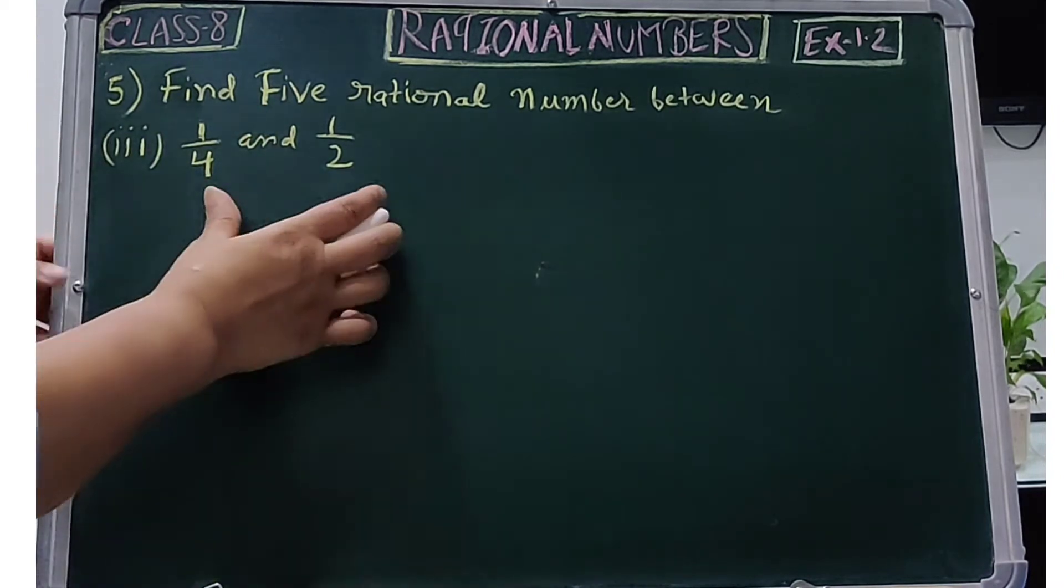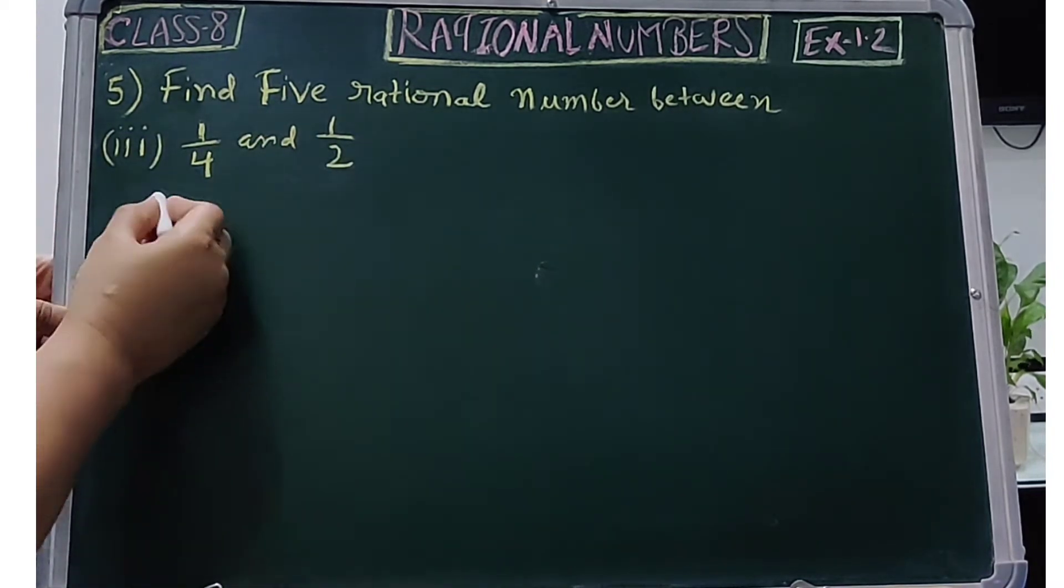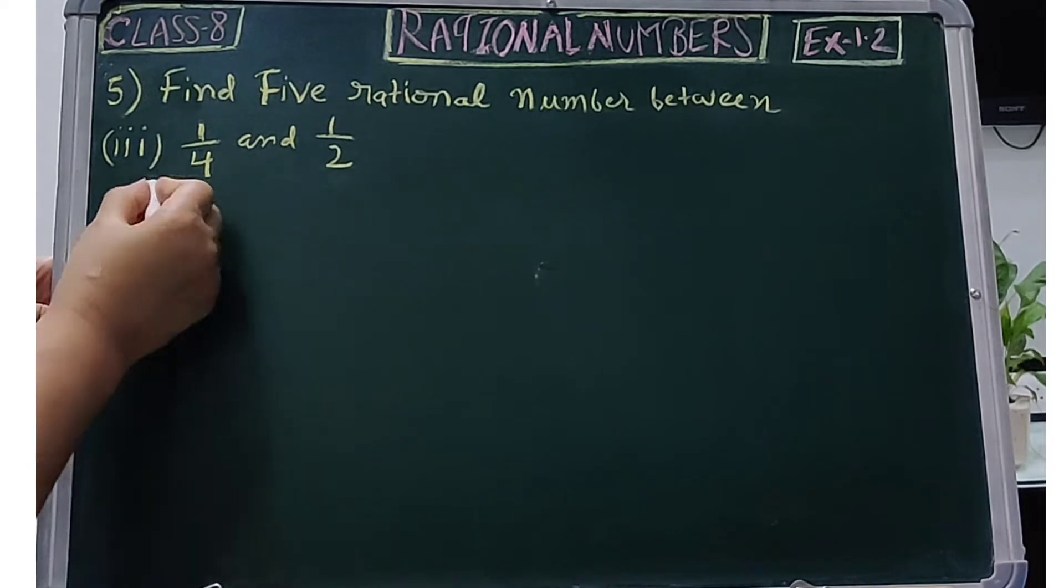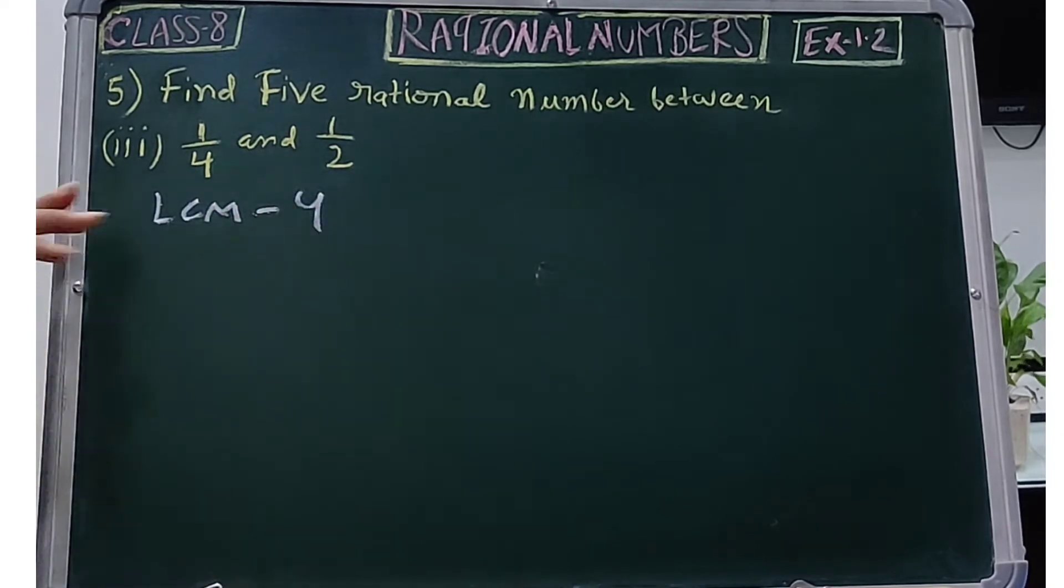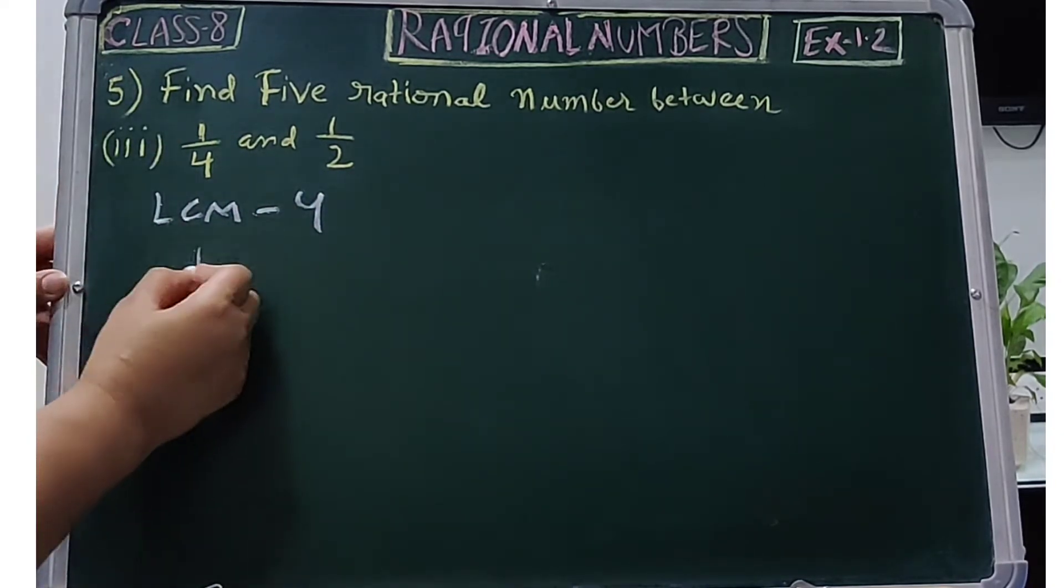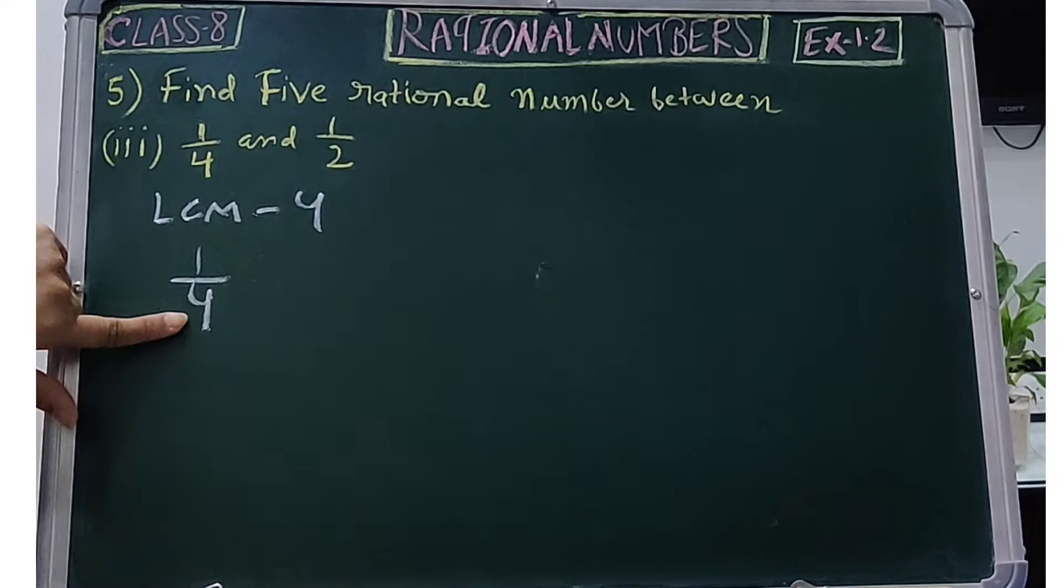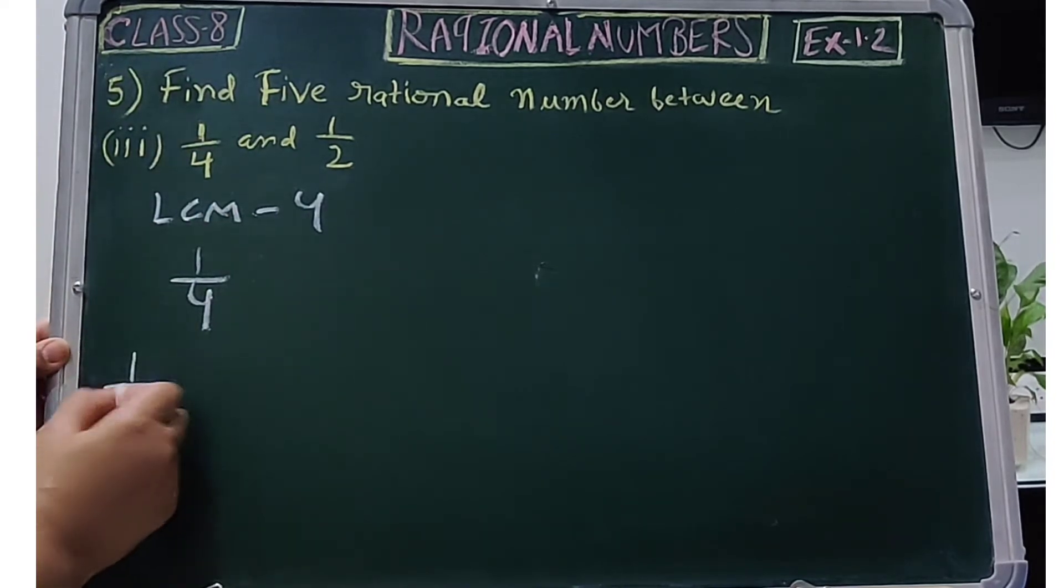Our first step is to make the denominators the same. If we use LCM, we get 4. So in this case, our denominator is 4. In 1/2, we need denominator 4.